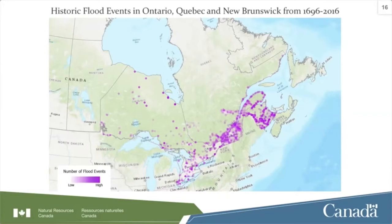Looking at a snapshot of the database for Ontario, Quebec, and New Brunswick, lighter colored circles indicate fewer events and darker purple circles indicate more events. We can see along the St. John River in New Brunswick a series of dark purple dots, and significant flooding along the corridor from Montreal to Quebec City. We're excited about this flood event layer and plan to continue building records for all provinces and territories to create a national historic flood event database, with a target completion by end of year.